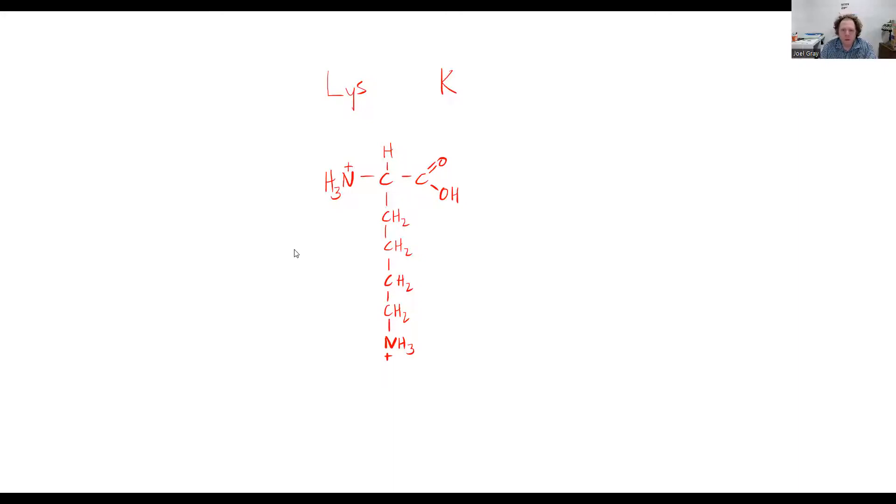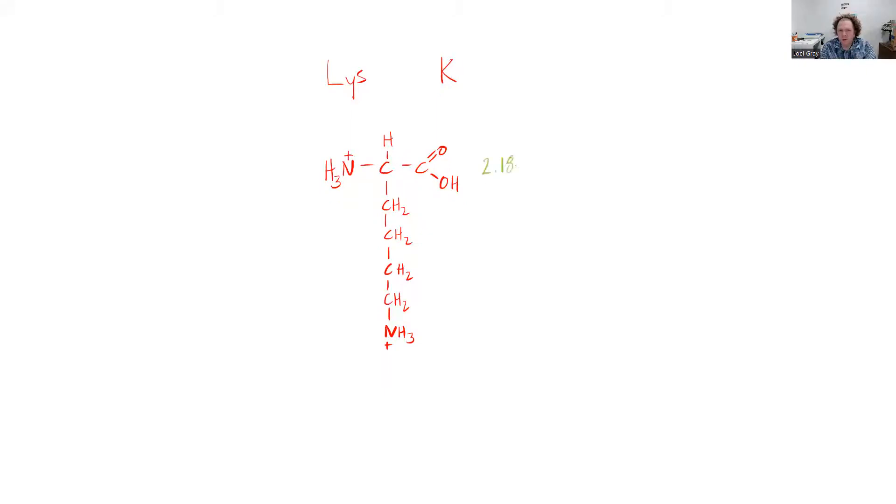The C-terminus has a pKa of approximately 2.18. The N-terminus has a pKa of about 8.95, and the R-group has a pKa of about 10.53.